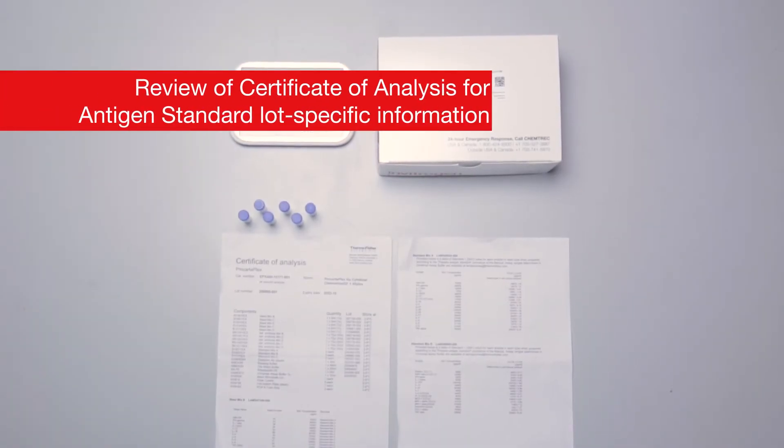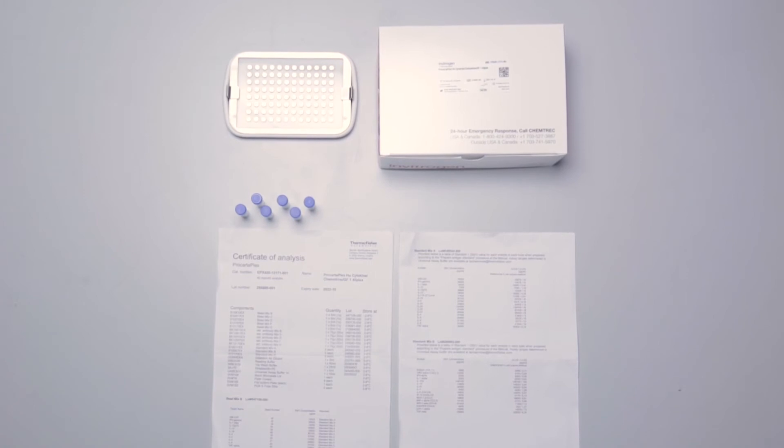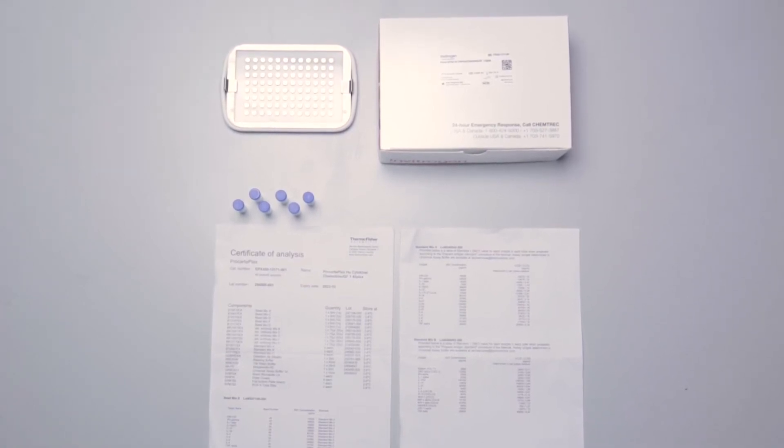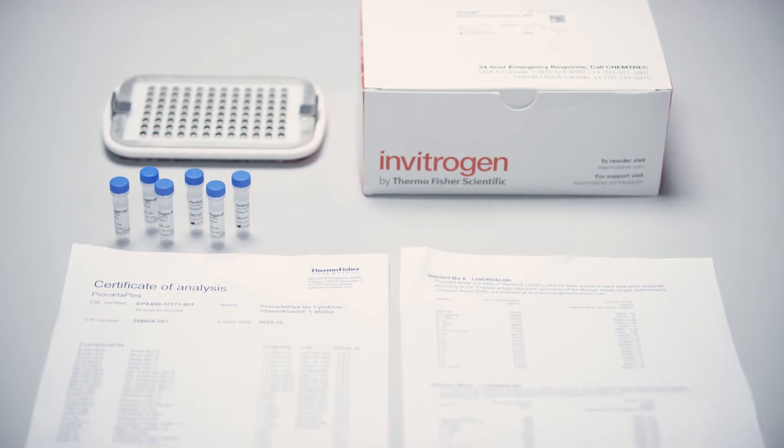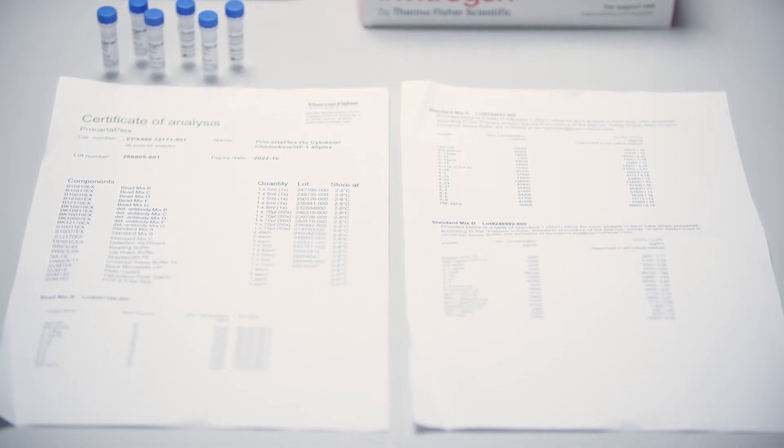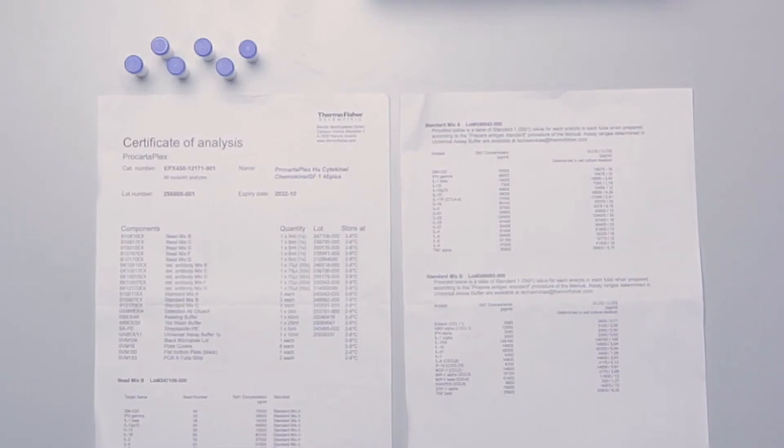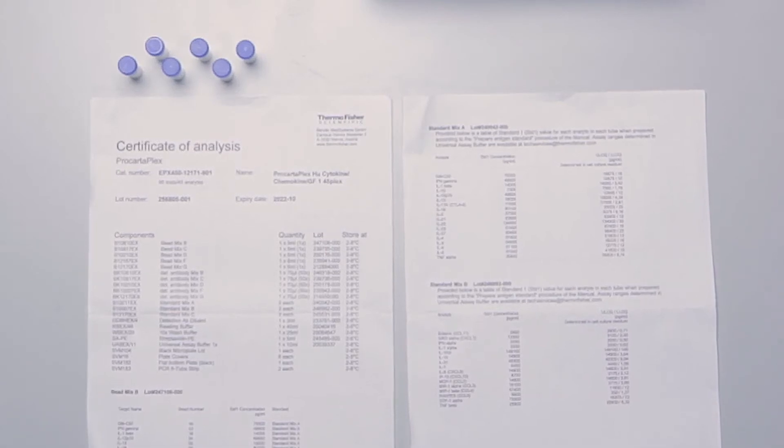Each ProCartaPlex combinable panel is shipped with two identical vials of each antigen standard to permit the user to run the assay twice if running a partial plate. Carefully review the certificate of analysis for lot specific information on the kit components and use the appropriate antigen standard. Only one vial of each antigen standard set is necessary to prepare the complete standard curve. Some combinable panels contain several different sets of antigen standards that require pooling prior to use in the assay.